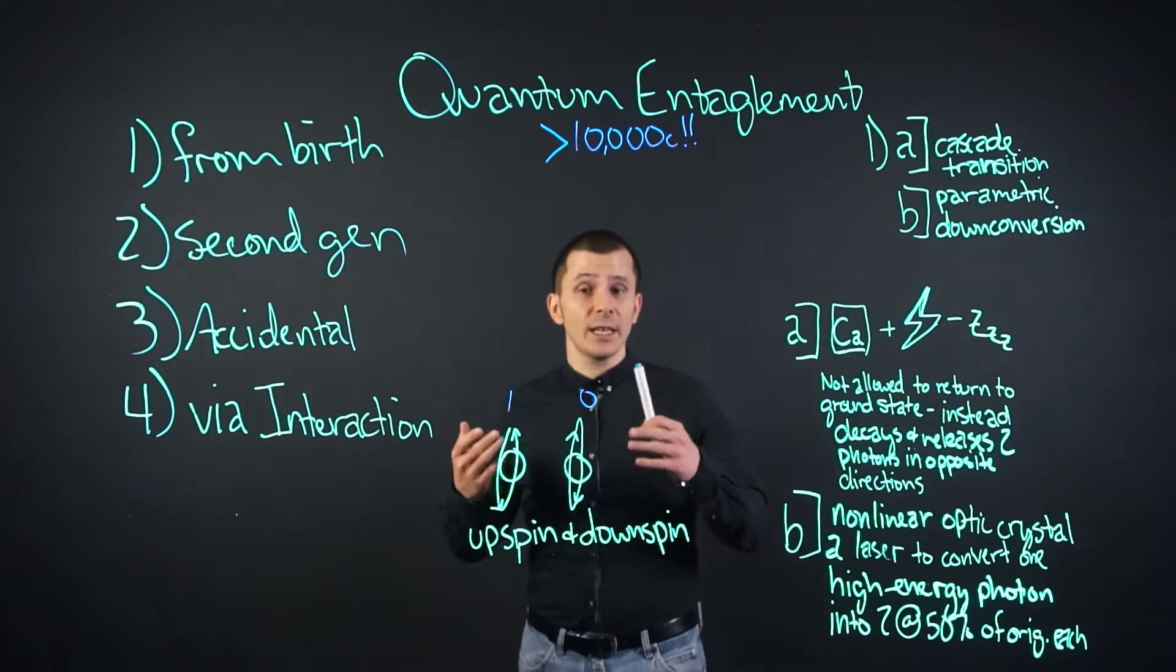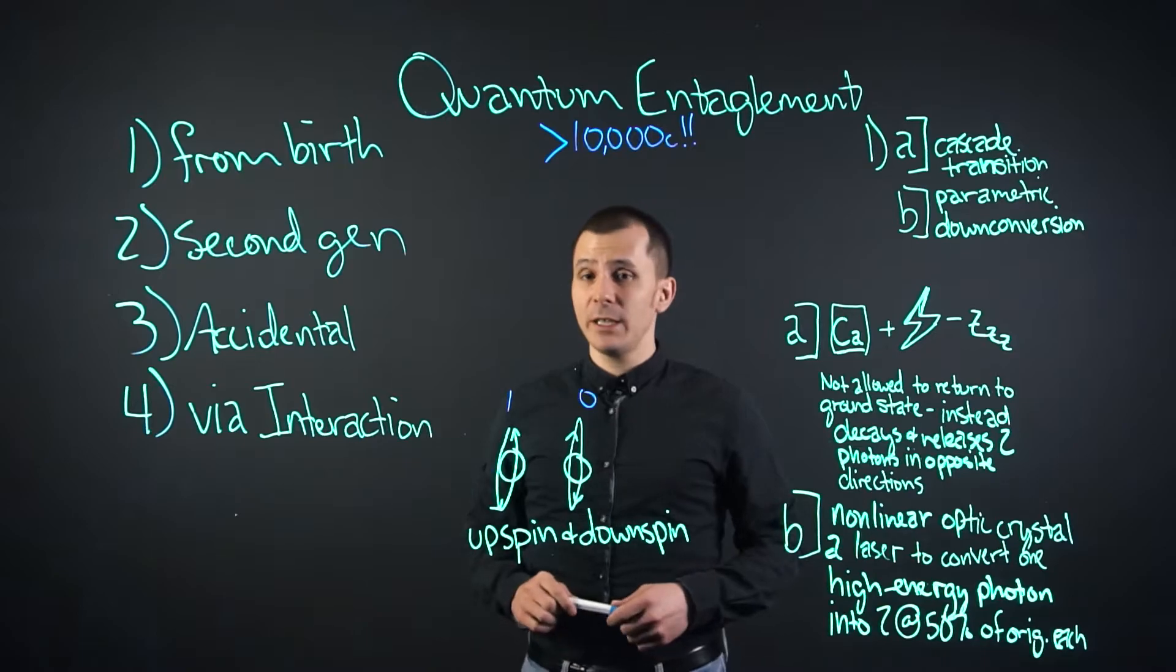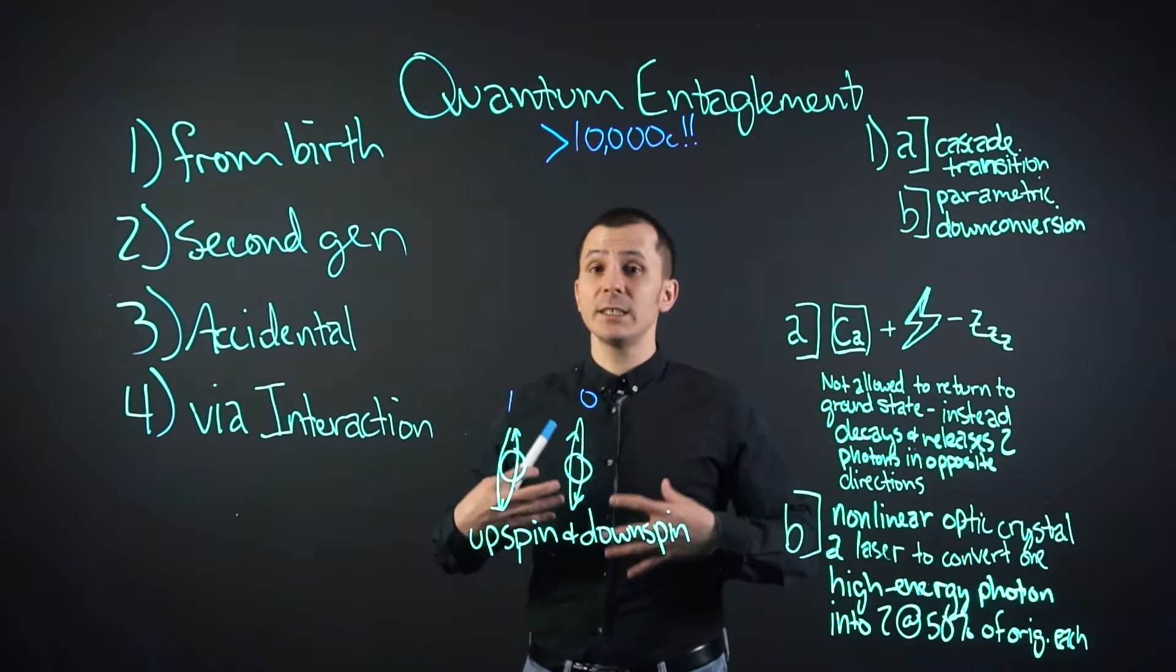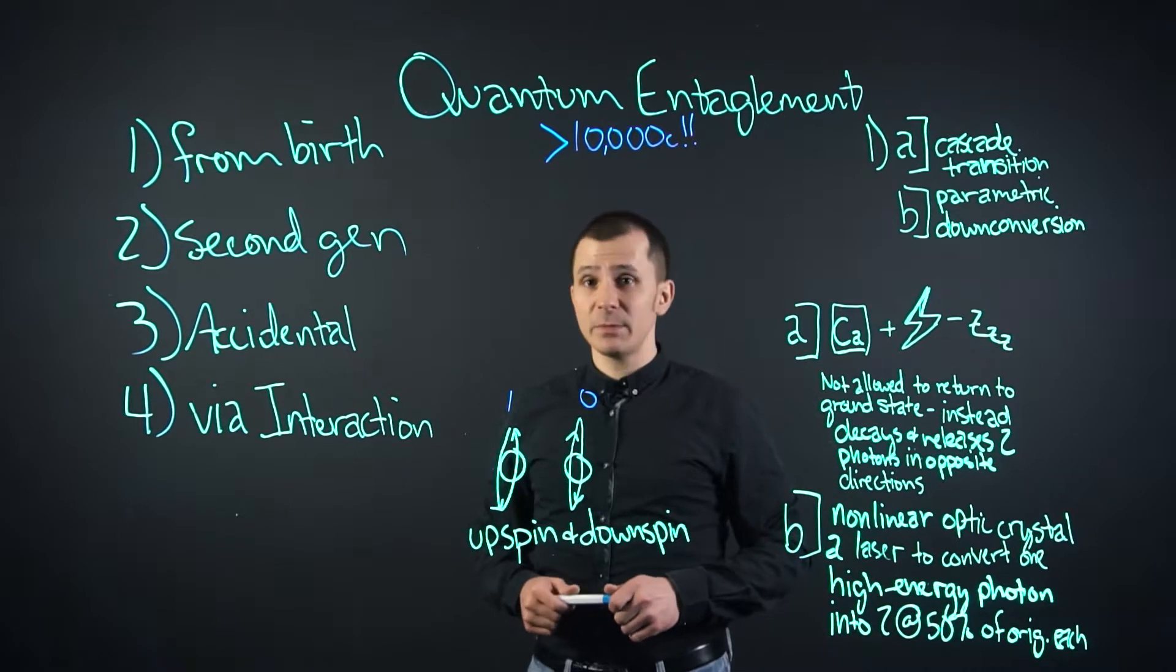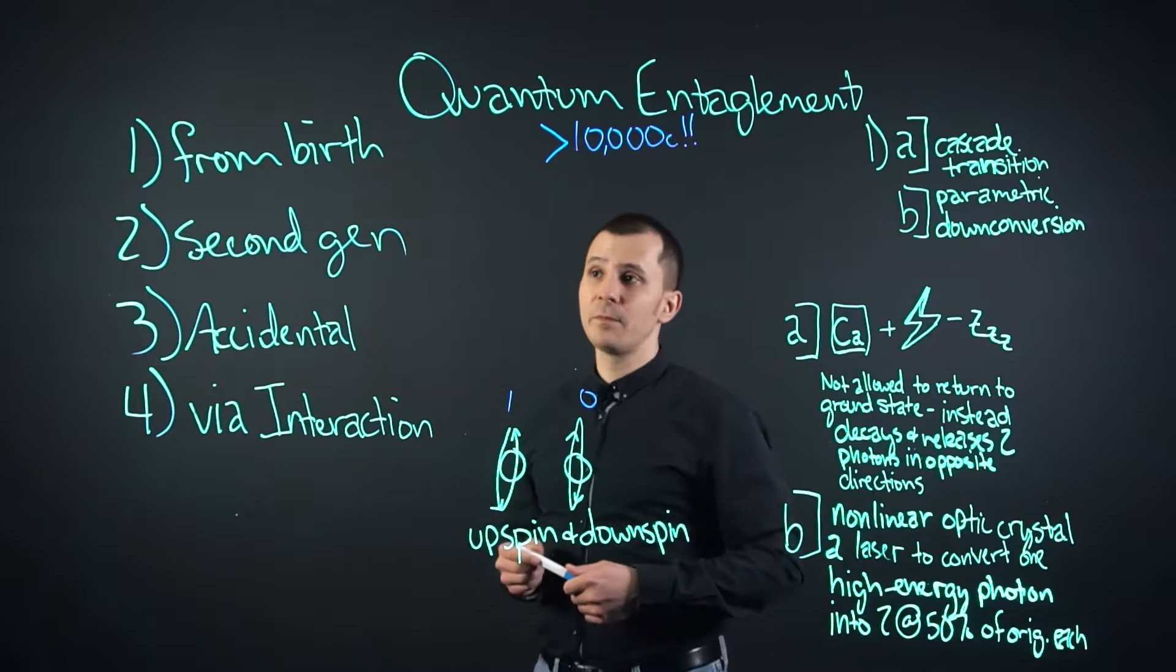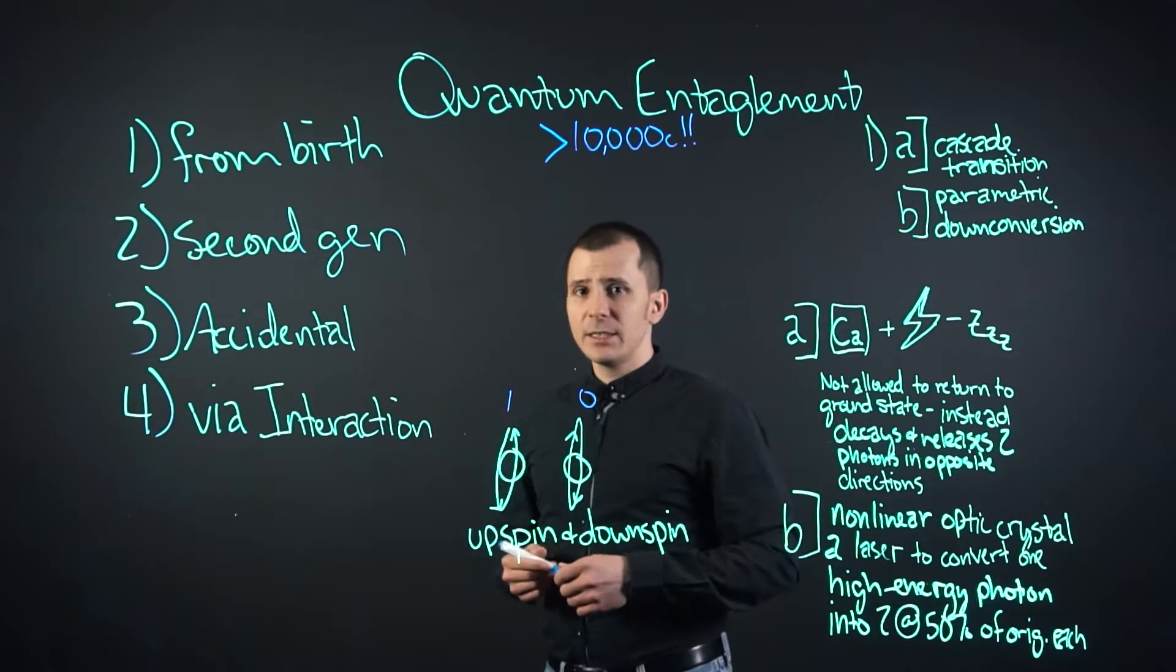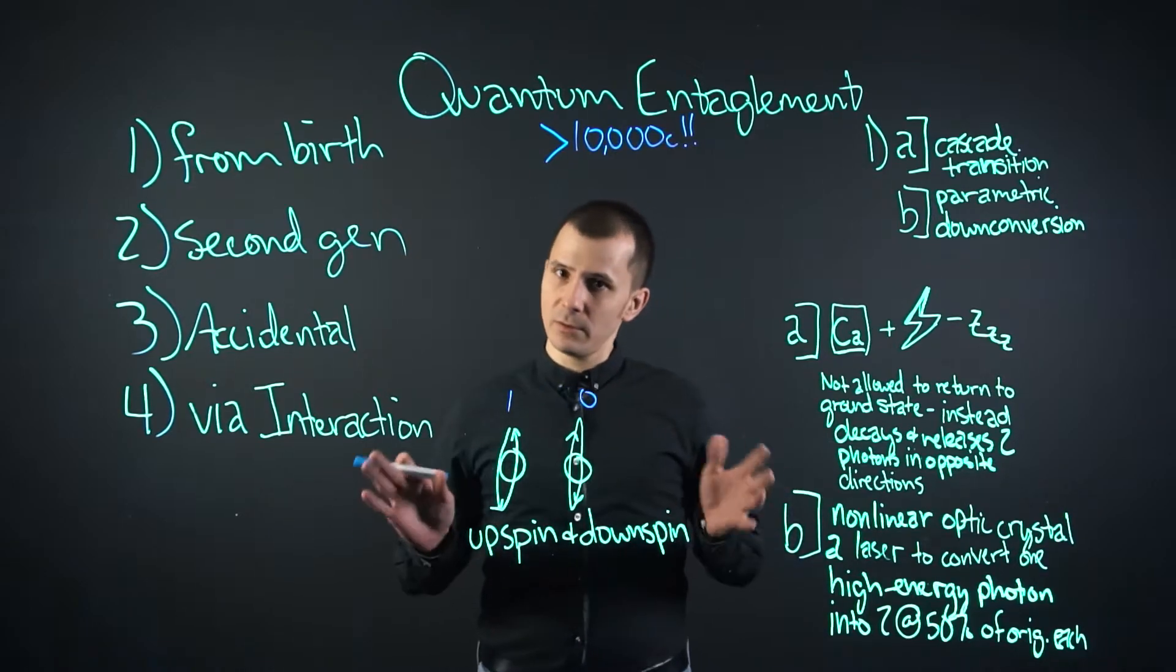We've discussed the quantum Zeno effect, the speed limit, the four generally known forms of causing a pair of entangled particles, and some specifics in causing an entangled pair from birth. What are some general applications we have today other than transmitting images back and forth via two devices?